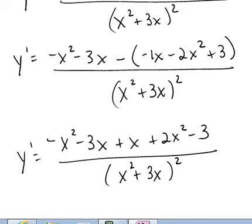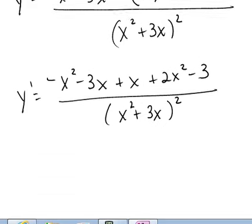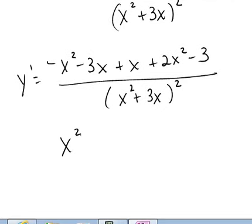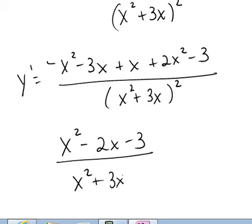Now the minus x squared and the 2x makes x squared, and then minus 3x and x makes minus 2x, and then minus 3. So x squared minus 2x minus 3 over x squared plus 3x quantity squared.